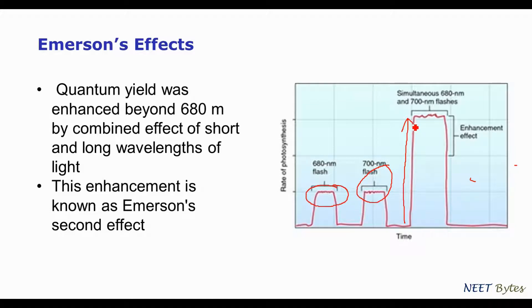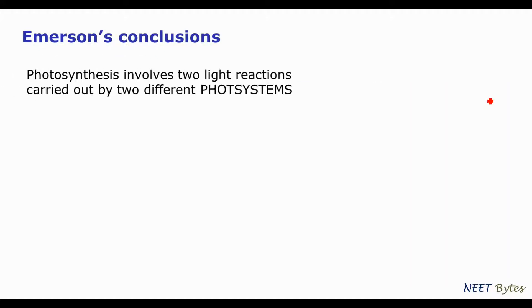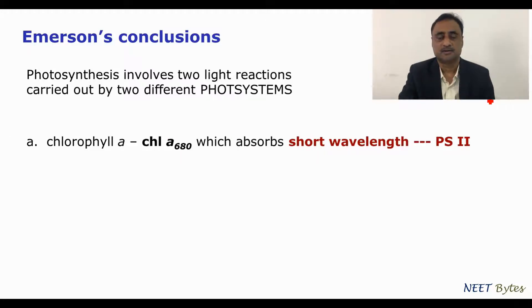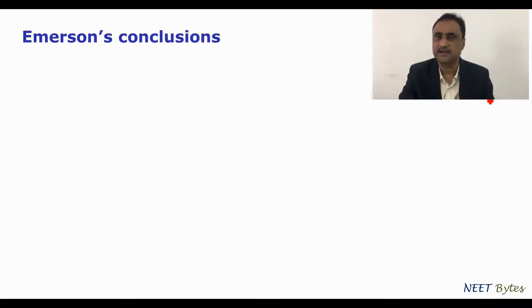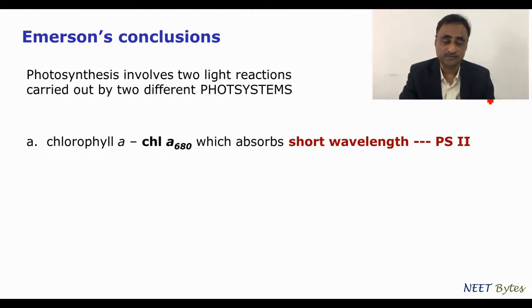The net conclusion was that photosynthesis itself consists of two photosystems. One operates at the longer wavelength and another at the shorter wavelength. Photosystem 2 operates at the shorter wavelength, and its reaction center is P680. Photosystem 1 operates at the longer wavelength and its reaction center is P700.